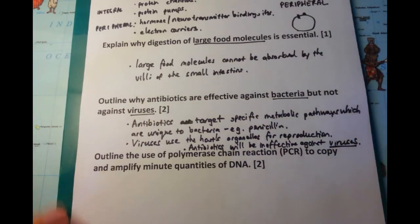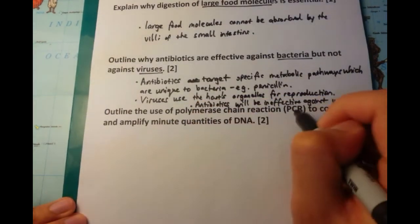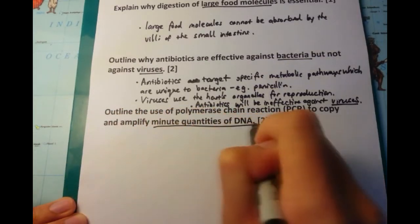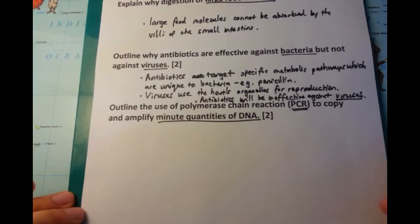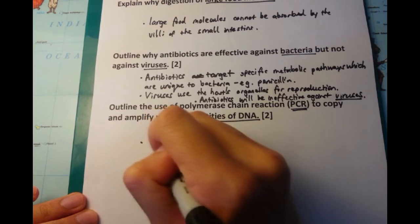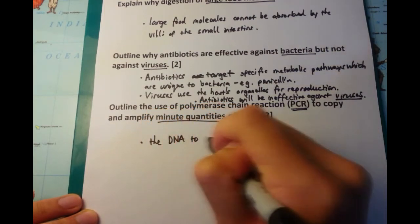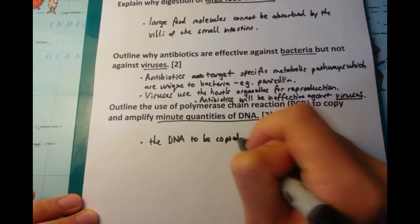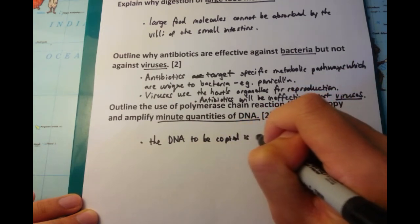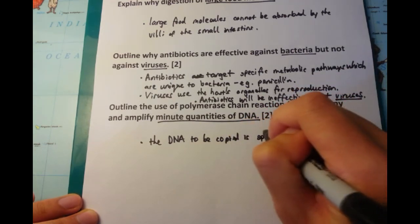The final one we're going to talk about is outlining the use of PCR, or polymerase chain reaction, to copy and amplify minute quantities of DNA. When you think about DNA and copying of it using PCR, you think about heating it and cooling it down, as well as some other enzymes, which I believe I forgot to mention in this particular case.